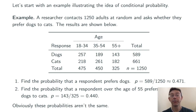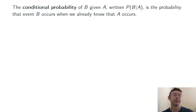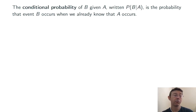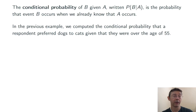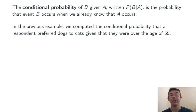Notice that the two probabilities are not the same. This points to the idea of conditional probability, which is defined like this: the conditional probability of B given A is the probability that event B occurs when we already know that A has occurred. So in this last example, in addition to computing P(B) — the probability that someone prefers dogs to cats — we computed P(B|A), the probability that someone prefers dogs given that they're over the age of 55.